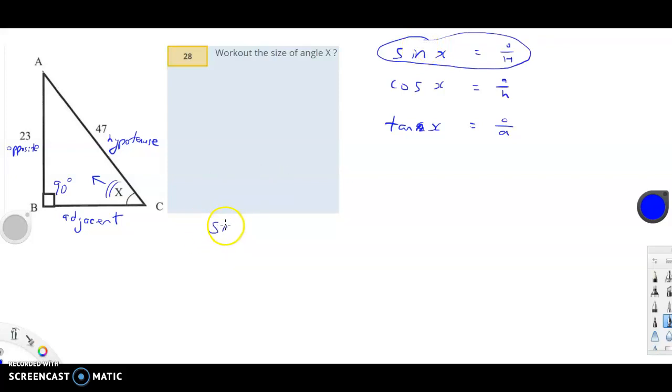So, sine X, we don't know X, but we're going to figure out. Sine X equals the opposite, the length of the opposite divided by the length of the hypotenuse, which is going to be 23 over 47.